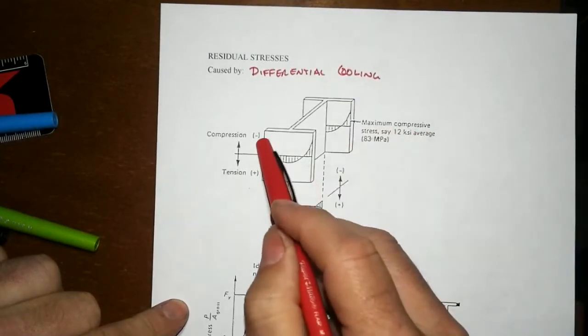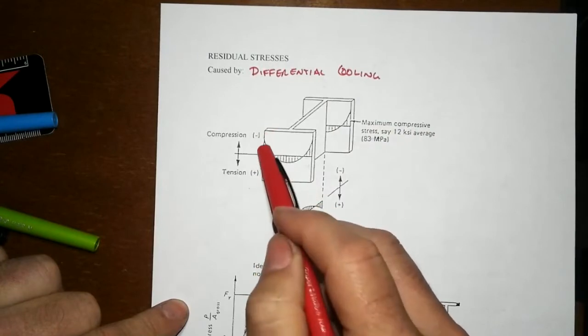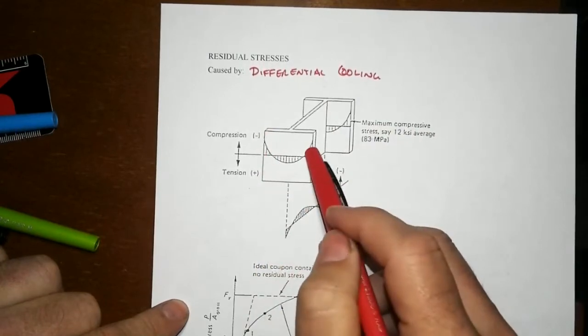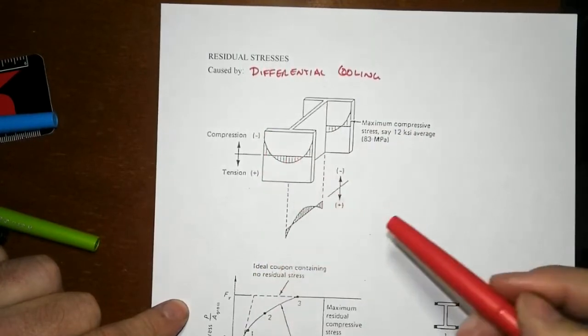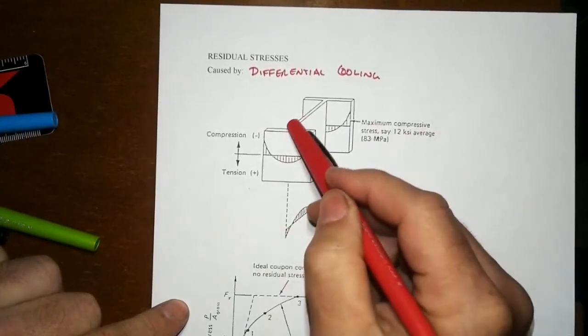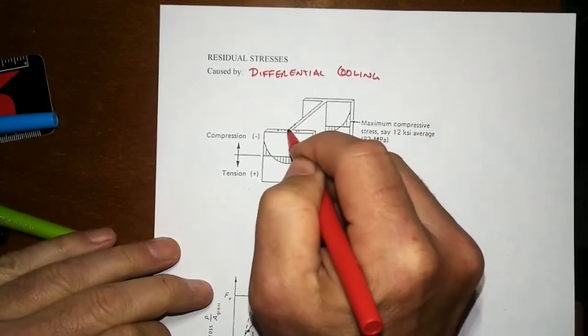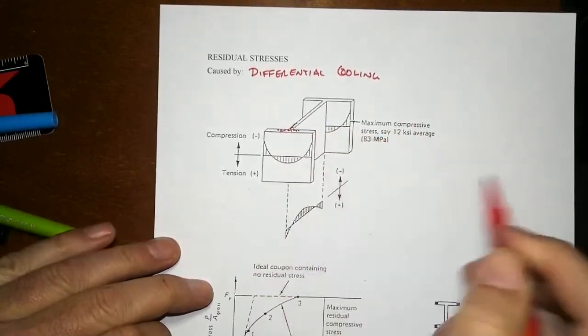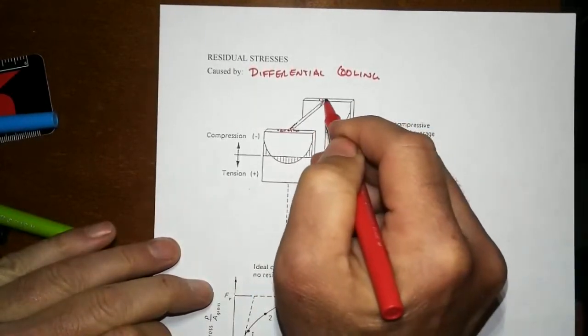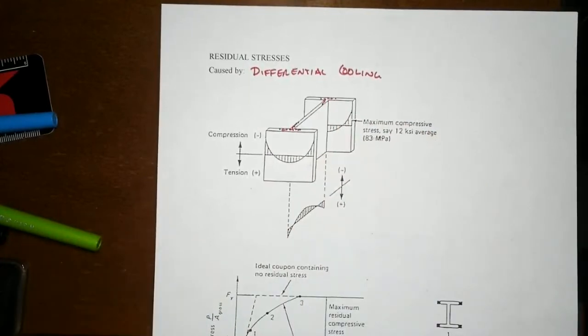Out at the edge of the flange, you get locked-in compressive stresses. And in the middle, you get some tensile stresses. In that region, you get net tensile stresses. That's actually a good thing for you in terms of compression. That means you can take on a little bit more compressive force. But out here, you can't.